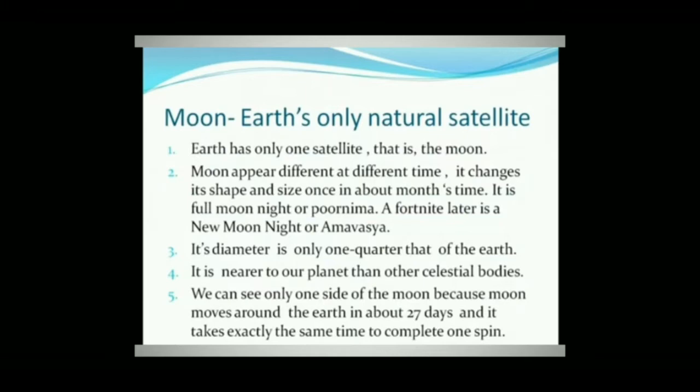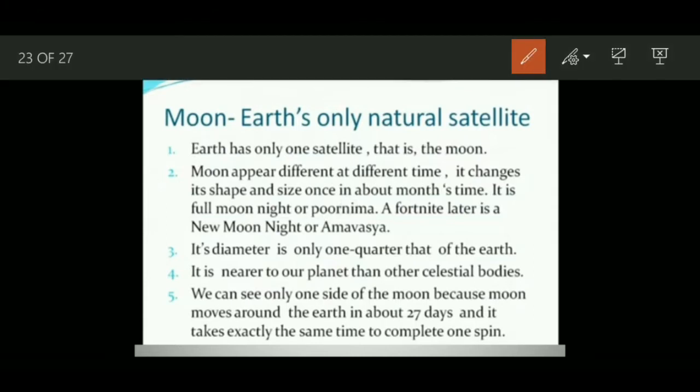A satellite is a celestial body that moves around the planets in the same way as the planets move around the Sun. The moon is the only natural satellite that Earth has, and the moon is very small as compared to Earth.